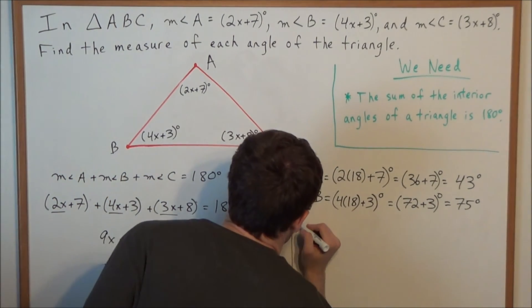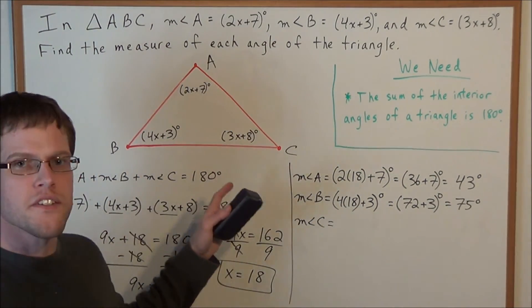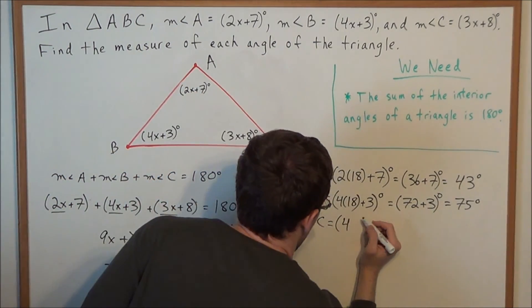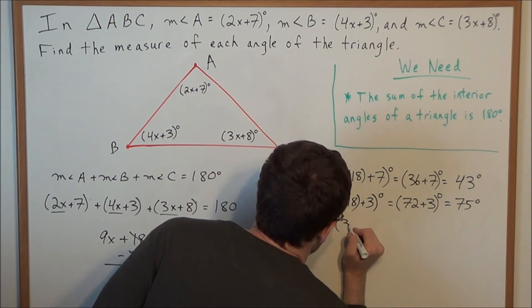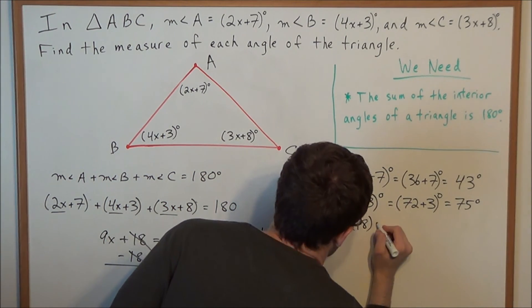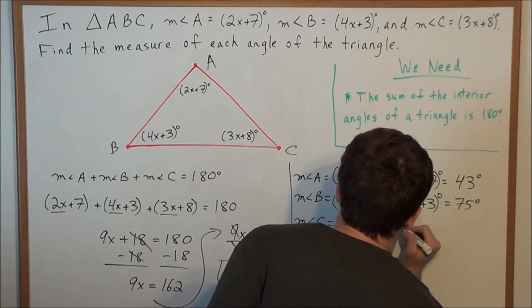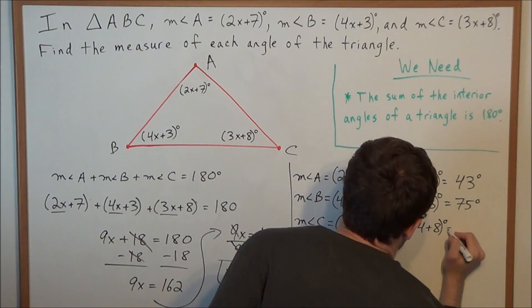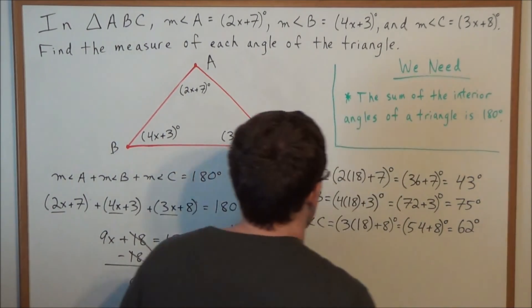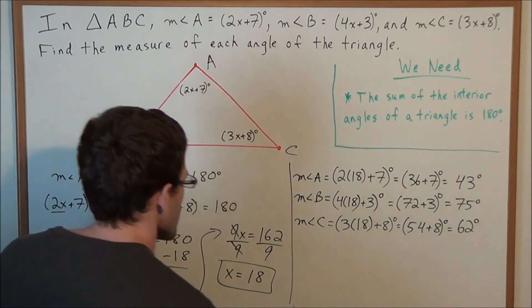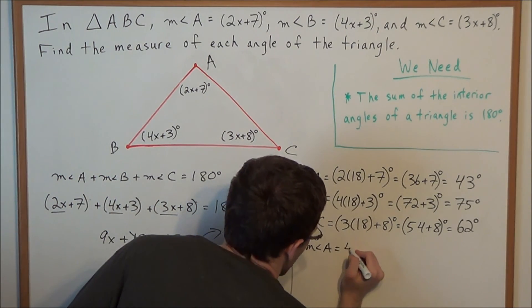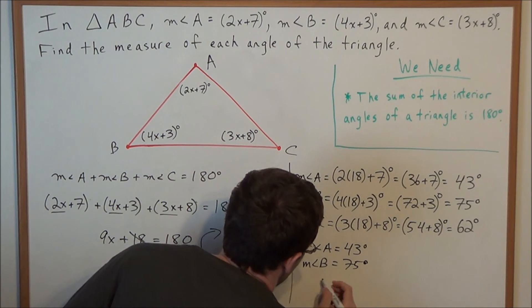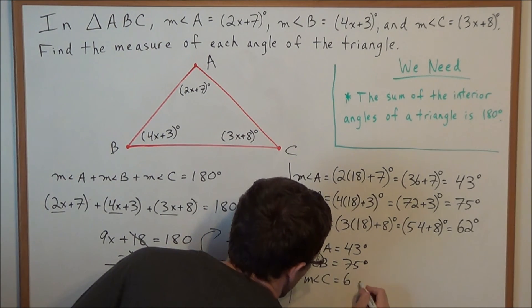Finally for angle C, the measure of angle C is 3x plus 8 degrees. Once again we replace x with 18, so we have 3 times 18 plus 8 degrees. Now 3 times 18 is 54, so we have 54 plus 8 degrees, and 54 plus 8 is 62. So the measure of angle C is 62 degrees.